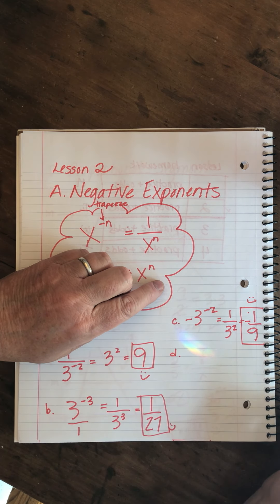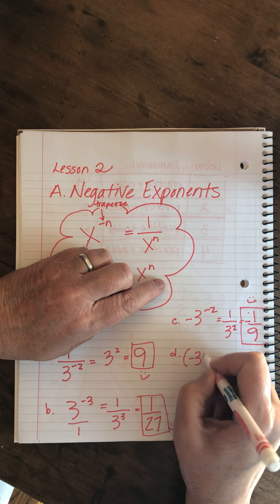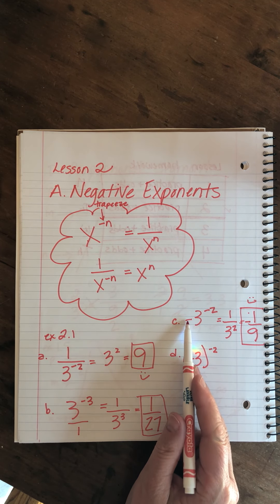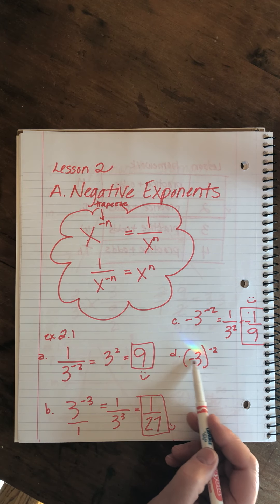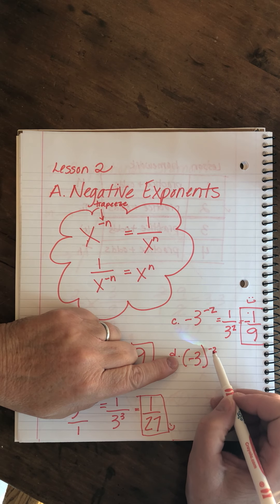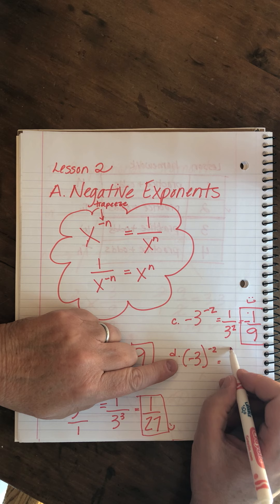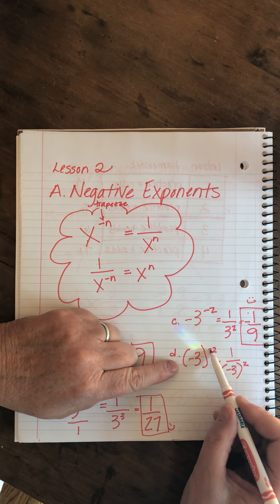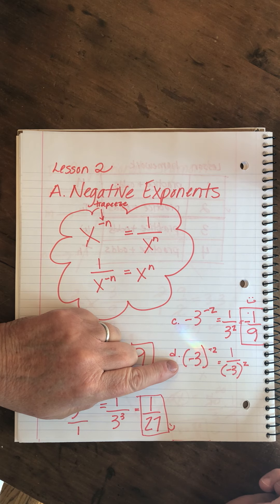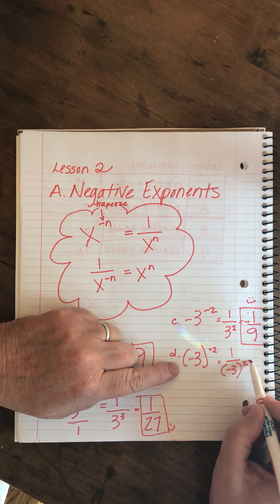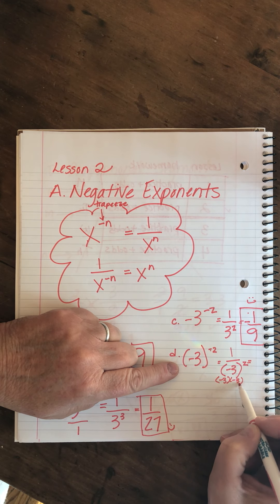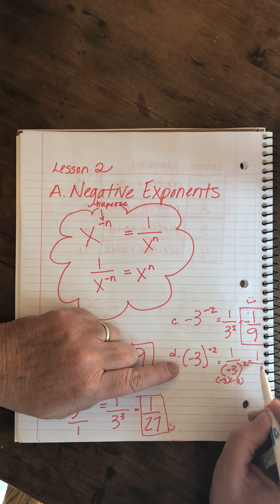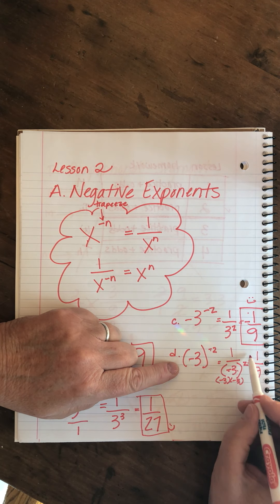D is minus 3 to the minus 2, but in parentheses. This minus sign is protected by the parentheses so we can't cover it up — we leave it connected to the 3. The negative exponent means flip it: 1 over minus 3 to the second power, burning off the exponent's minus sign. Minus 3 times minus 3 is positive 9, so the final answer is 1 over 9 — a positive answer.